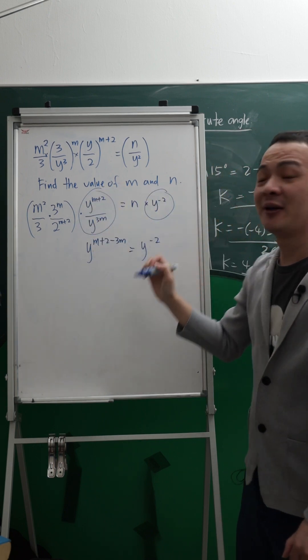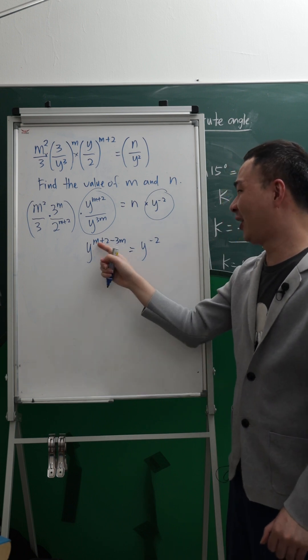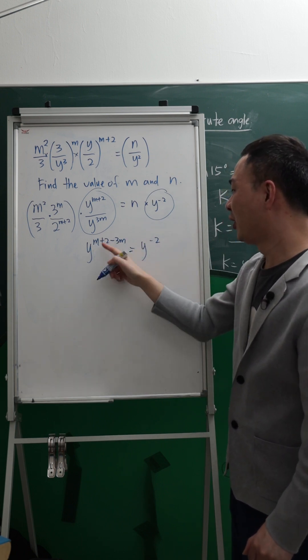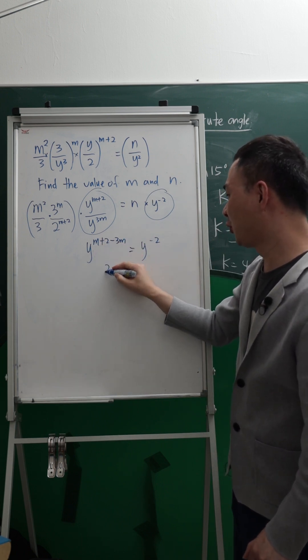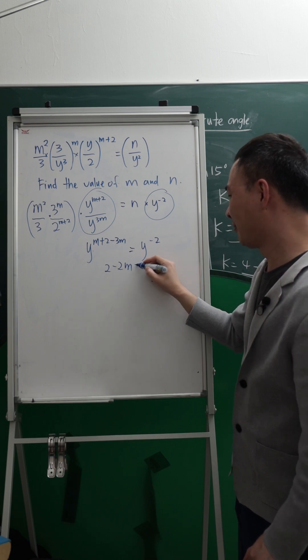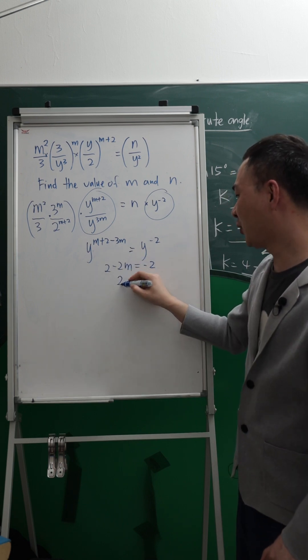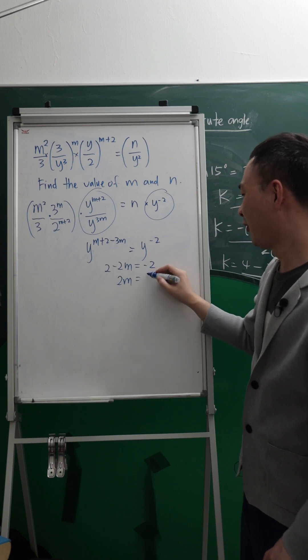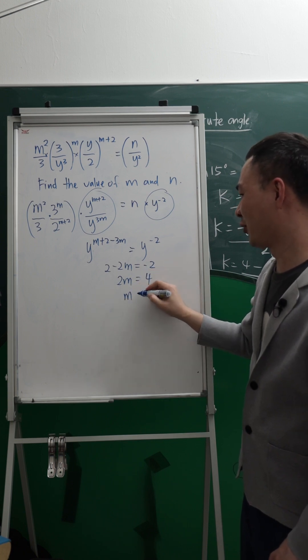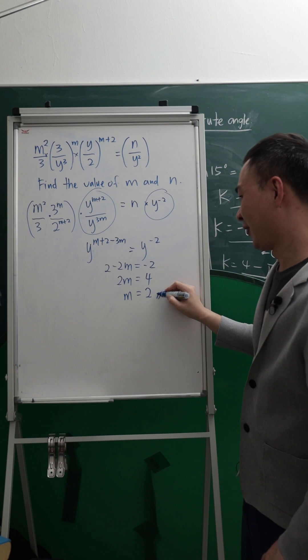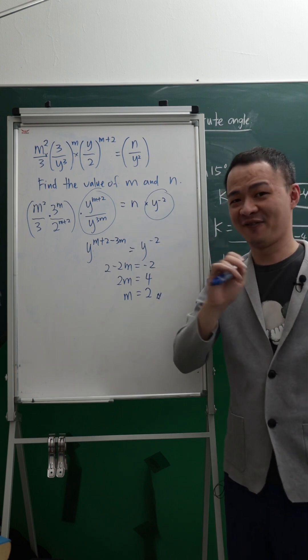Y power of negative 2. By doing this one, now I can just compare their power. M minus 3M, which is 2 minus 2M, must equal to negative 2. By solving this one, 2M must equal to 4, then M will equal to 2. This is how I find the M value.